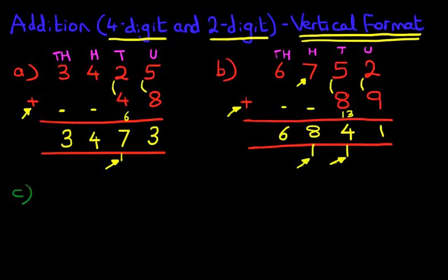Let's have a look at one more. This time we've got 7,328 plus 92. So you've got that in your, let's suppose you're taking a test. That question appears, and you've been told you must work it out in the vertical format. So let's do that.